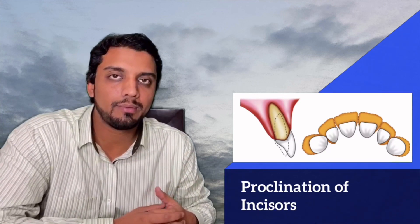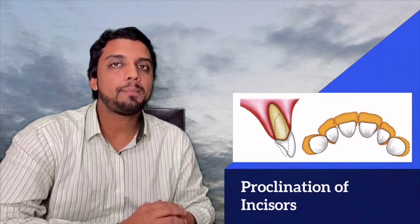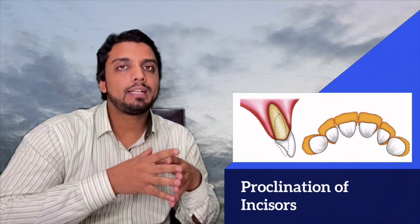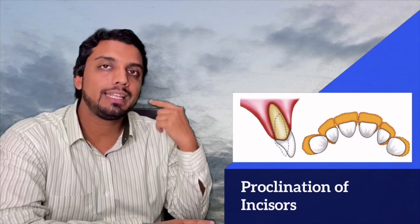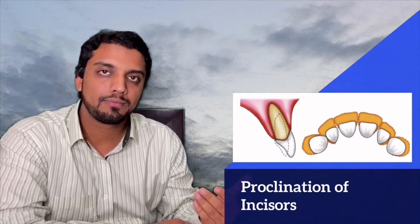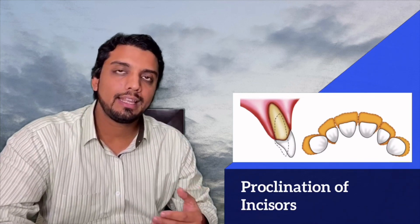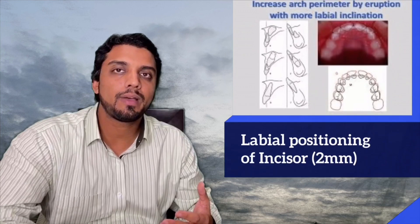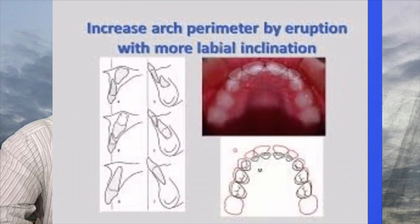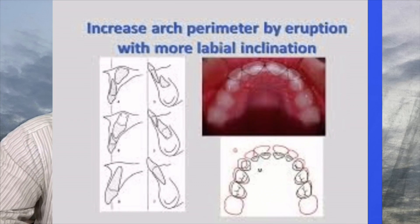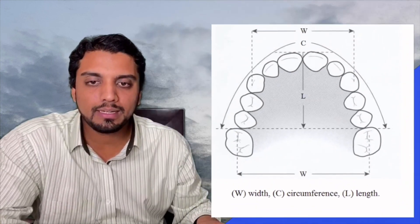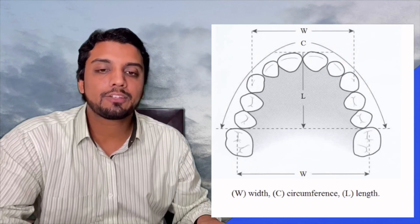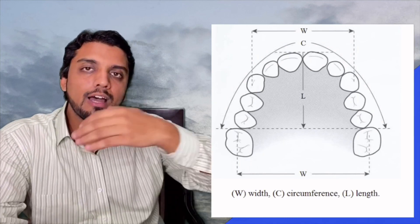Apart from the primary and primate spaces, the increased inclination of the permanent incisors also helps in the adjustment of the incisor liability. The primary incisors are retroclined, but when the permanent incisors erupt they are proclined. With the proclination of the upper incisors, you get extra space because they are in an arch of greater circumference. The labial position of the permanent incisors provides extra space because they sit in the arch of greater circumference, which also increases the arch length.